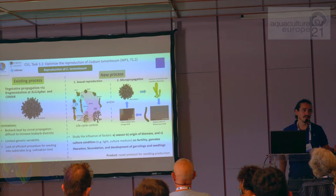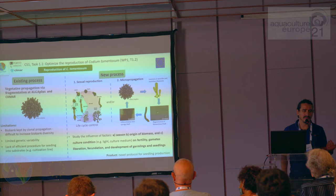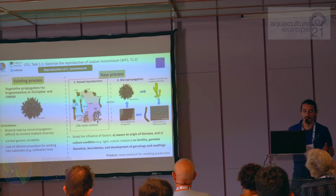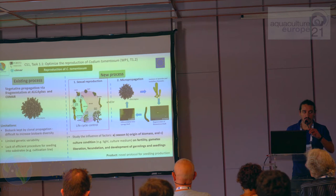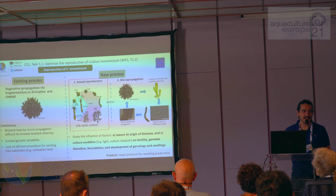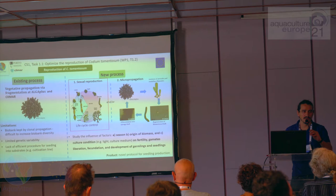We are exploring two new different methods: one based on sexual reproduction of this species, and another based on a micropropagation technique. The work I'll be presenting today is focused only on the sexual reproduction of the species. We've been looking at the effect of season, origin of biomass, and different culture conditions on production parameters such as fertility, gamete release, fecundation rate, germling development, and formation of spongy thallus — the adult Codium.